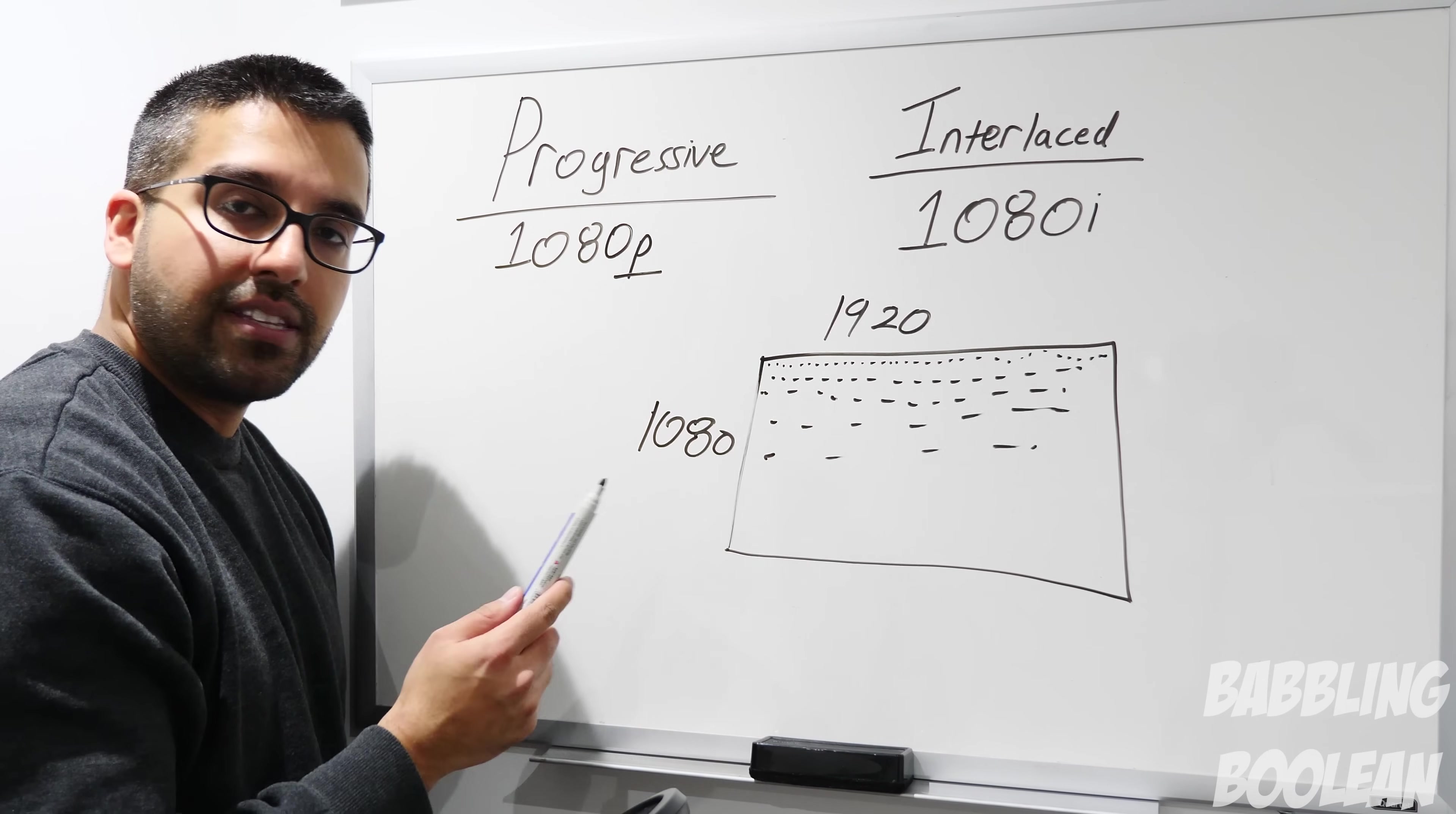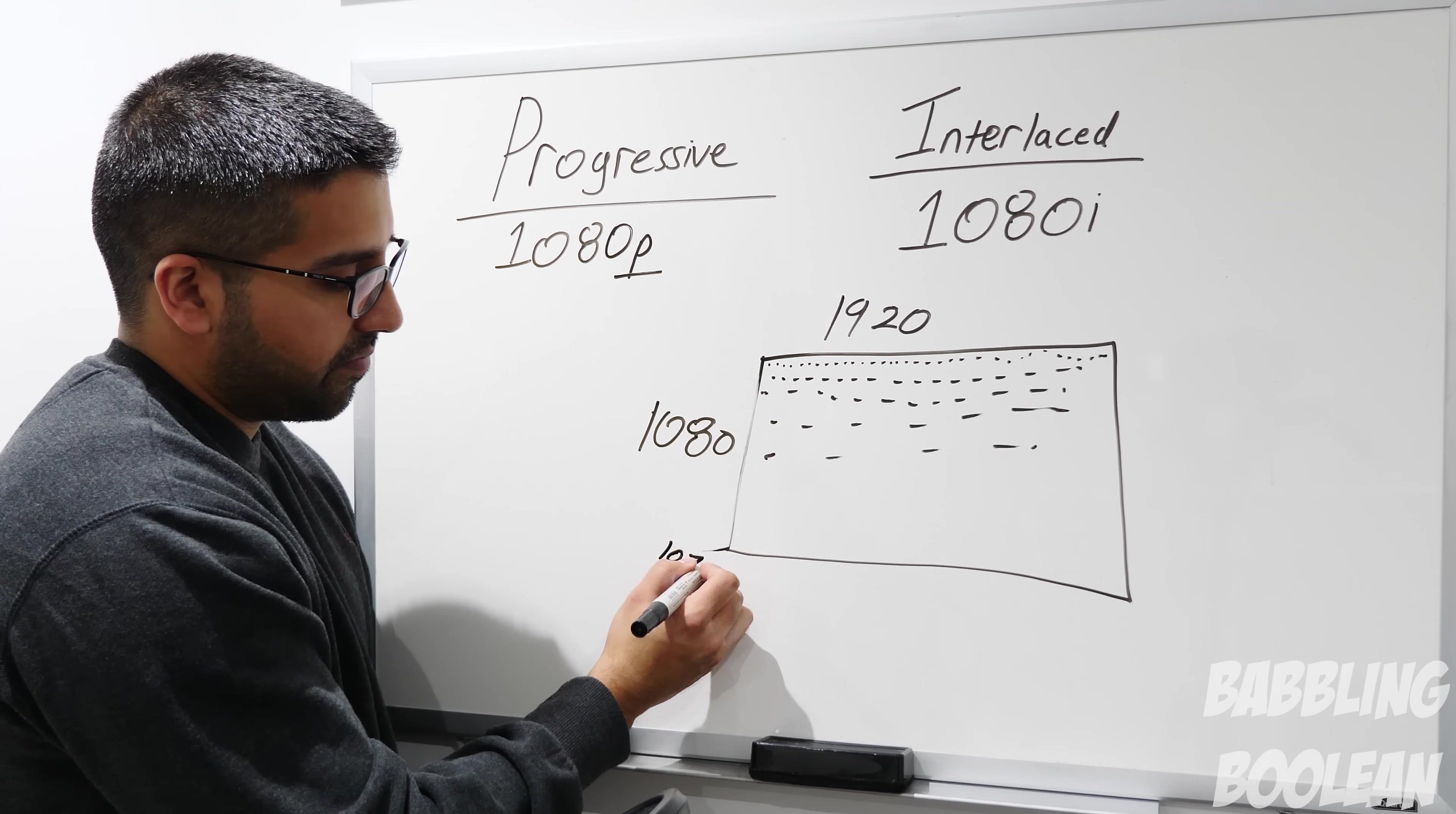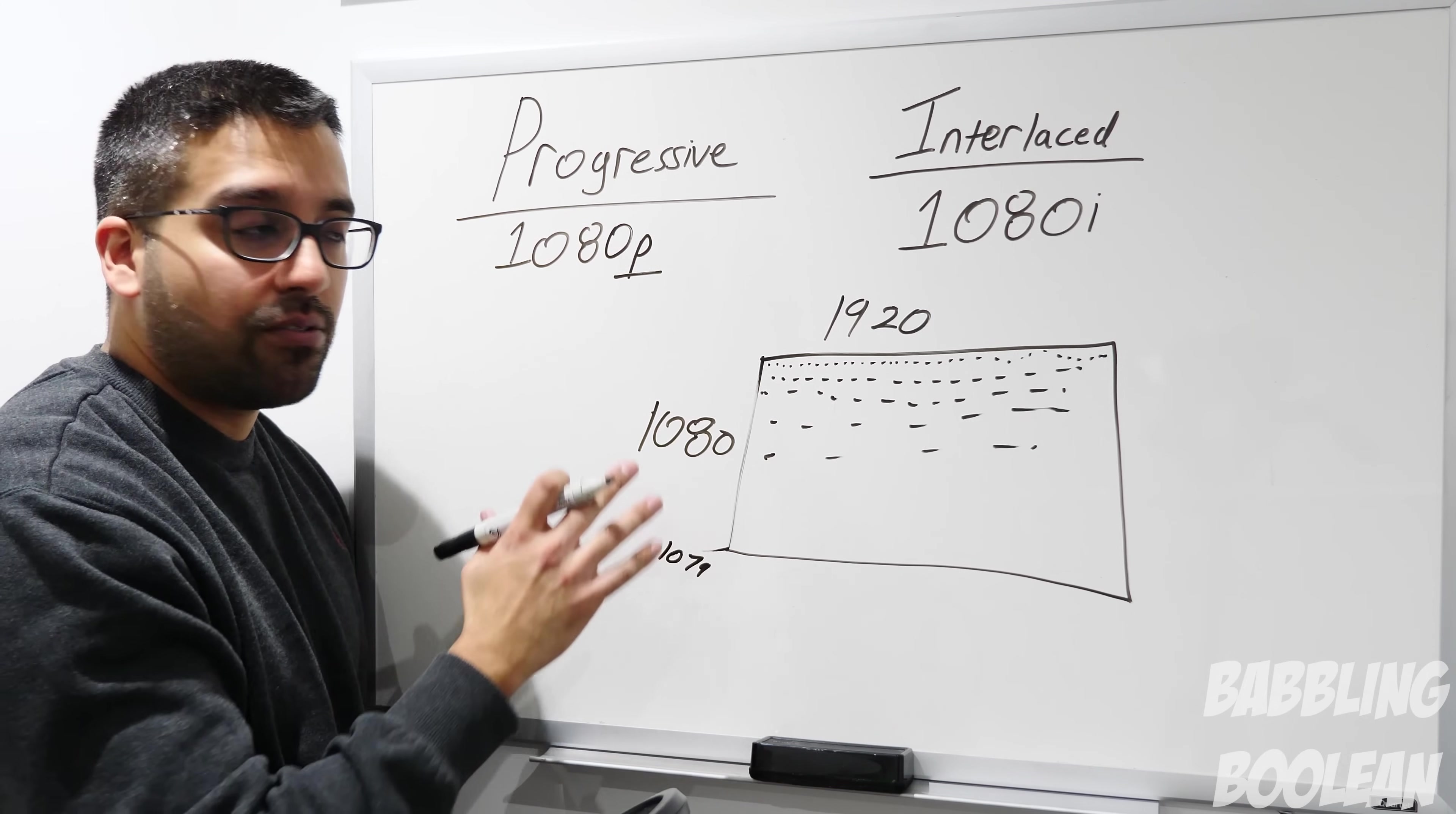What happens with interlaced is that when you're seeing the picture, interlaced will show the image in halves. You have all the odd lines which get projected first, so you have the first line of pixels, then line 3, 5, 7, 9, 11, 13, and so on until you reach line 1079, because that's the last odd number before we hit 1080. Then those odd lines turn off and the even lines turn on, which is lines 2, 4, 6, 8, 10, 12, all the way up until 1080.